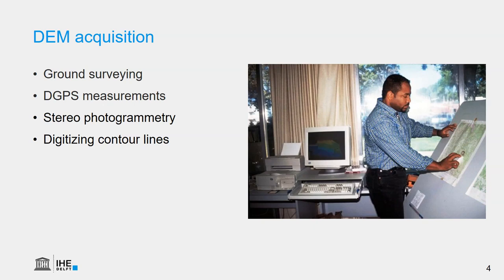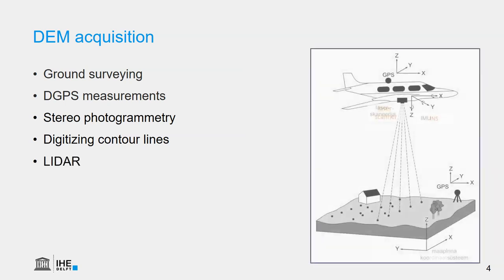Also very laborious is digitizing contour lines. Many maps have contour lines printed on them, and we can use a device to digitize these contour lines — a lot of manual work. We can then interpolate those contour lines to a raster that we can use in the models.